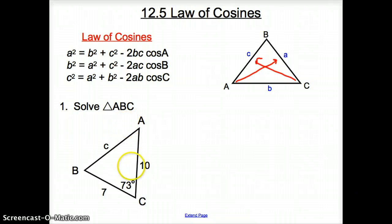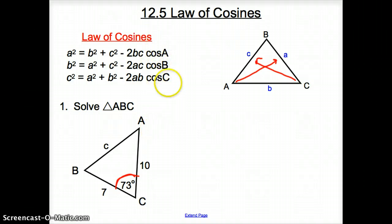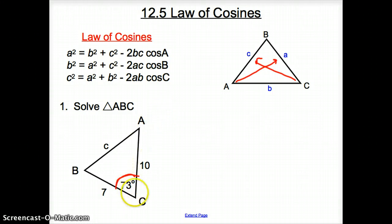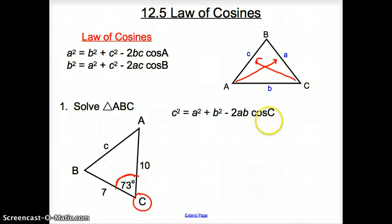Now we first have to look at what we have. When we're given an angle — this angle C — I'm going to use the Law of Cosines that has the cosine of that angle I'm looking for. So since I have 73°, and that is my angle C, I'm going to use the Law of Cosines where it's cosine C.